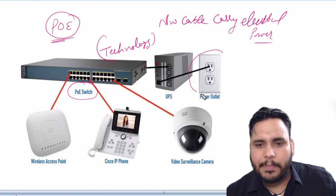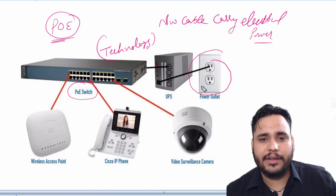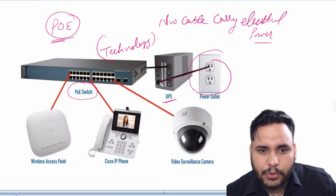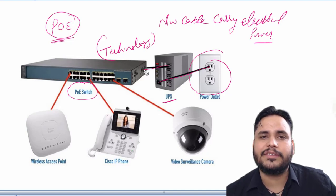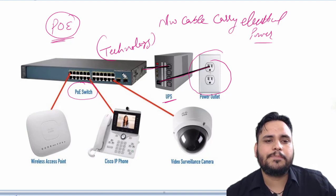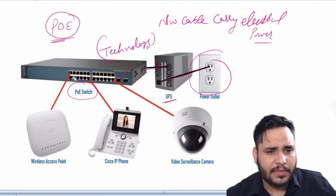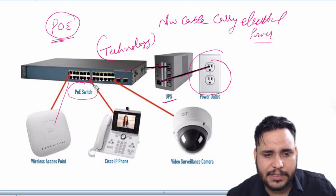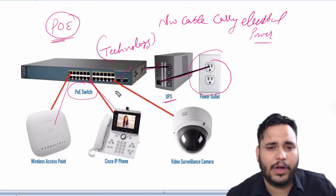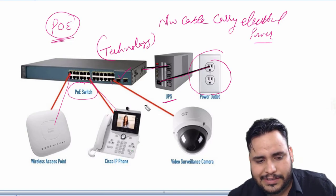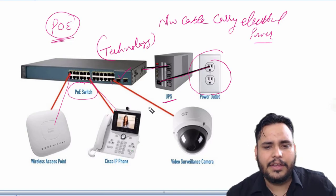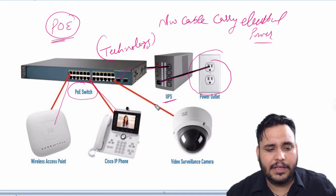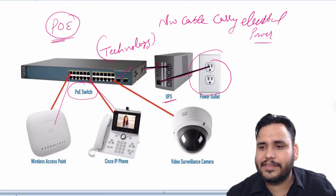For example, here you can see there is a power outlet, and that power outlet is connected with a UPS. The UPS is connected with the switch — this is a Power over Ethernet switch. The PoE switch can then connect to wireless access points, Cisco IP phones, video surveillance cameras, and many other devices.